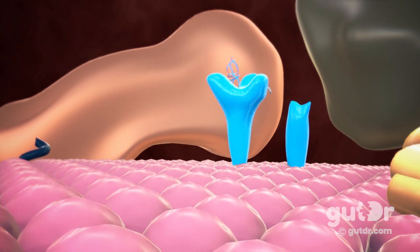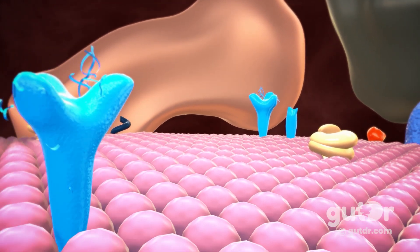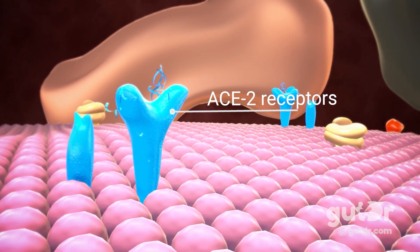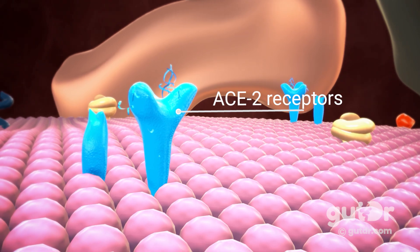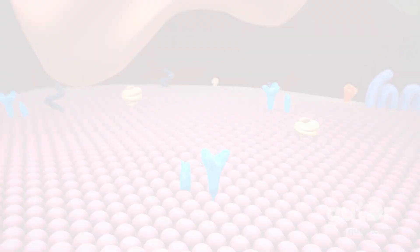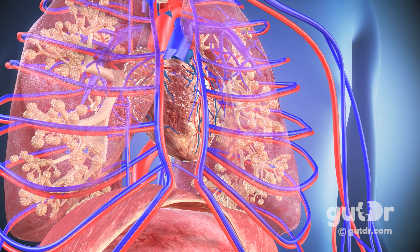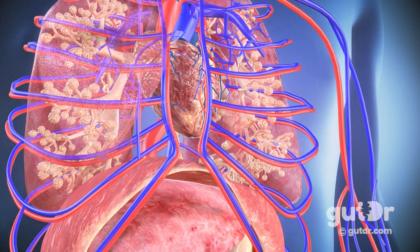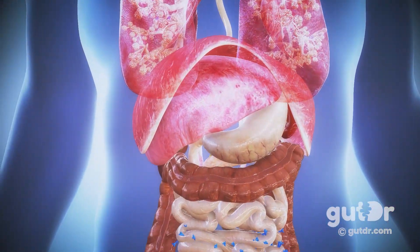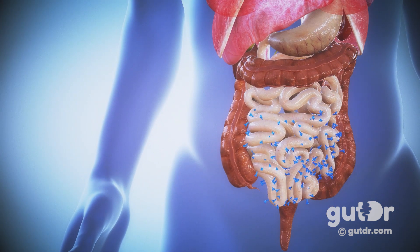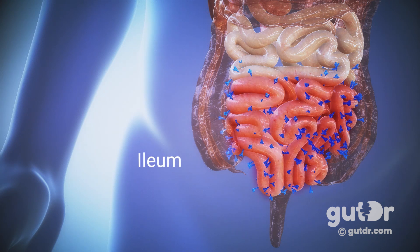What we do know is that angiotensin-converting enzyme 2, also known as ACE2 receptors, on the surface of cells are required for SARS-CoV-2 infection. Around 2% of the cells lining the respiratory tract have ACE2 receptors, and they're also found in cells lining blood vessels. But the greatest number of ACE2 receptors are actually found in cells lining the gut — around 30% of cells lining the last part of the small intestine, called the ileum, contain ACE2 receptors.